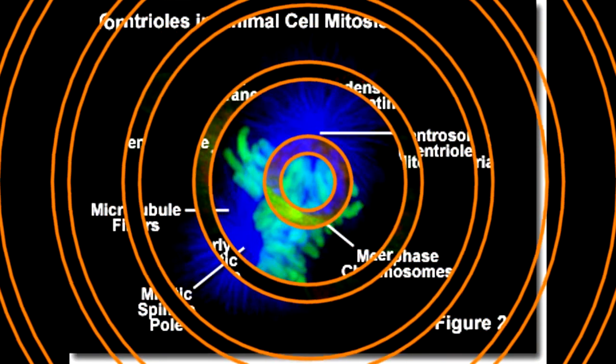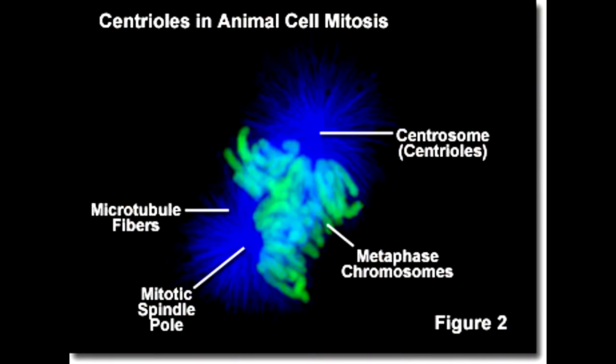The centrioles move to each pole routinely. With sleight of hand, the nucleus pulls a quick Houdini. Next is metaphase.